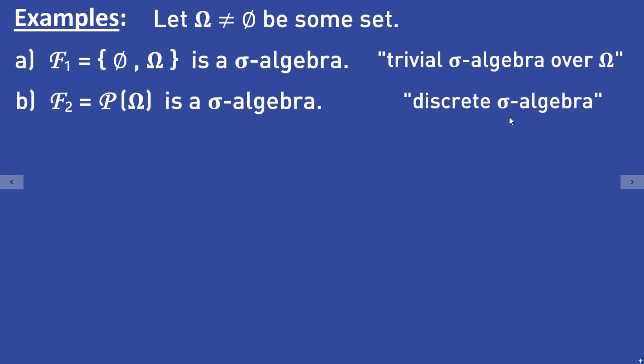The power set is a sigma algebra because the set omega is a subset, and complements and unions of subsets are subsets again — so an element of the power set which contains all subsets of omega. Thus the power set of omega is a sigma algebra, called the discrete sigma algebra.